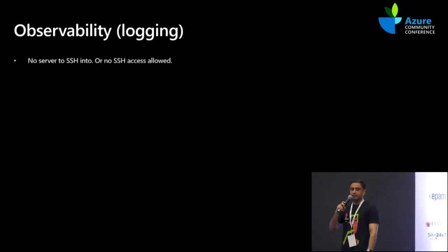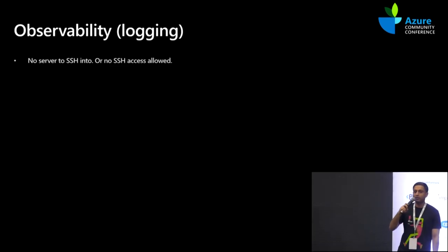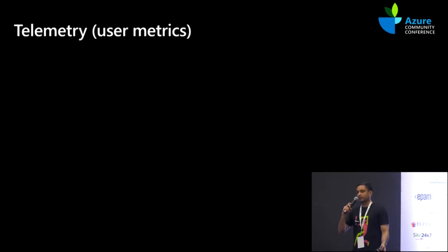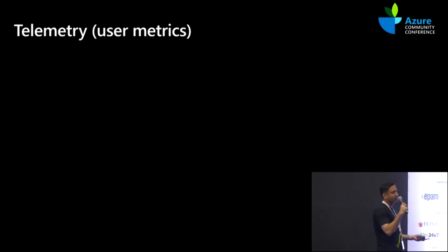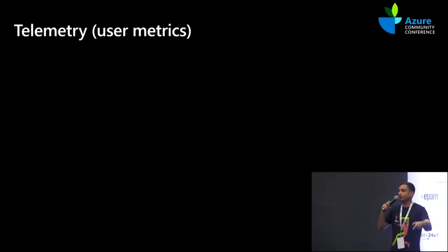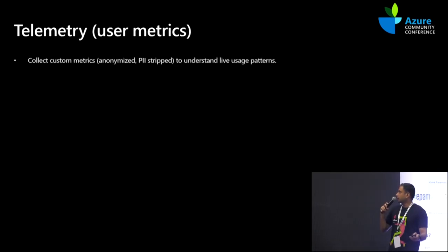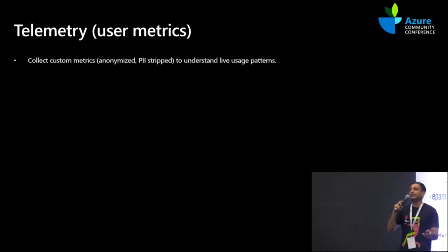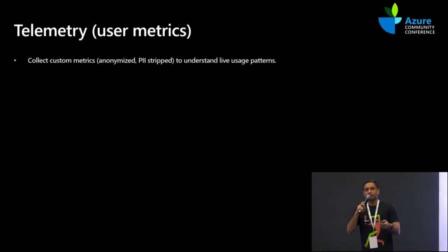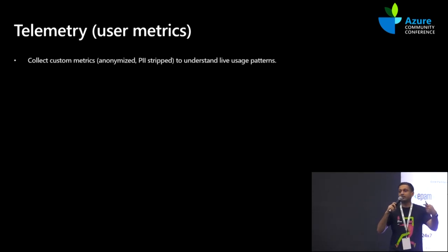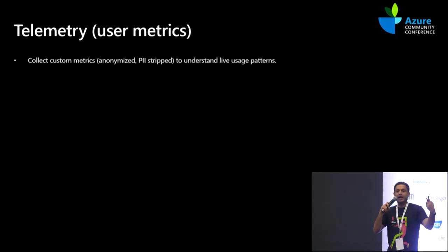For observability — again, serverless means no server to SSH into. So if something goes wrong, logs have to be there. Log level is set to information by default, but if you need additional logging, all you have to do is change a Key Vault value, restart the application, and it will pick up that configuration and start spitting out more verbose logs. A lot of user metrics are being tracked — for example, if you search for a specific icon like Azure Container Apps and it returns zero results, we generate a custom event saying that icon was not found. Behind the scenes we analyze that telemetry and go ahead and add that icon to our repository.